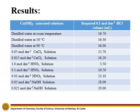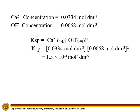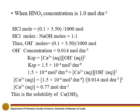Results obtained from this experiment are included in this table. Under calculations, let's first calculate the Ksp value for saturated calcium hydroxide solution at room temperature. We can calculate the Ksp value of calcium hydroxide using the concentration of Ca²⁺ and the concentration of OH⁻. Now let's calculate the solubility of calcium hydroxide when the HNO3 concentration is equal to 1M. Since the Ksp value is constant at a given temperature, we can use the previously calculated Ksp value for this calculation.